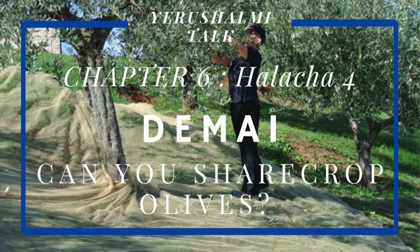The Gemara says if a Cohen's cow was placed in a partnership with a Yisrael herdsman and the cow gave birth to a Bechor, the Bechor belongs to the Cohen — those are the words of Rabbi Yudah. But the Sages say the Bechor belongs to both of them and is the exclusive property of neither. According to the Sages, the owner and herdsman divide the Bechor between them: the Cohen's half is his to keep, and the Yisrael gives his half of the Bechor to whichever Cohen he chooses. This dispute parallels the one in this Mishnah regarding a Cohen and Yisrael partnering to harvest the Cohen's olive trees or sell the Cohen's olive oil, where the partners share equally in profit and risk.